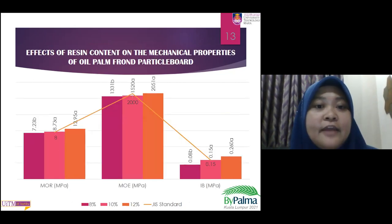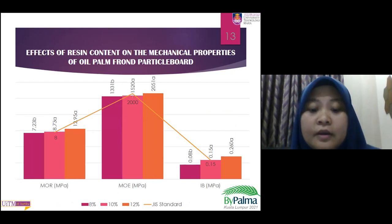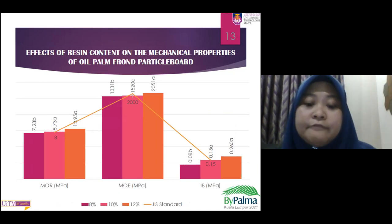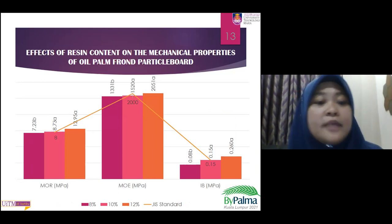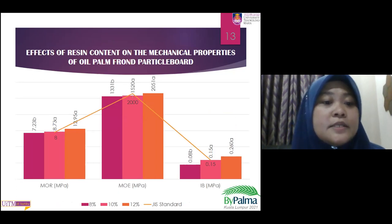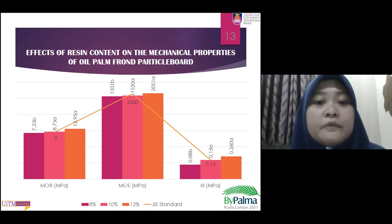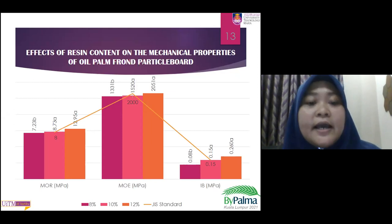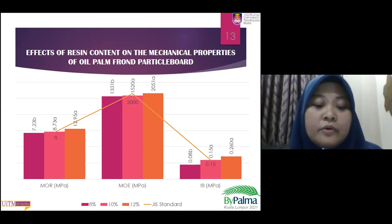The next is the effect of resin content on the mechanical properties of oil palm frond particle board. The MOR, MOE, and internal bonding were affected by an increase in resin content from 8% to 10%. There is a significant difference between resin content of 8% and 10%. But the board with 12% resin content gives a higher value due to more resin content and higher bonding area.